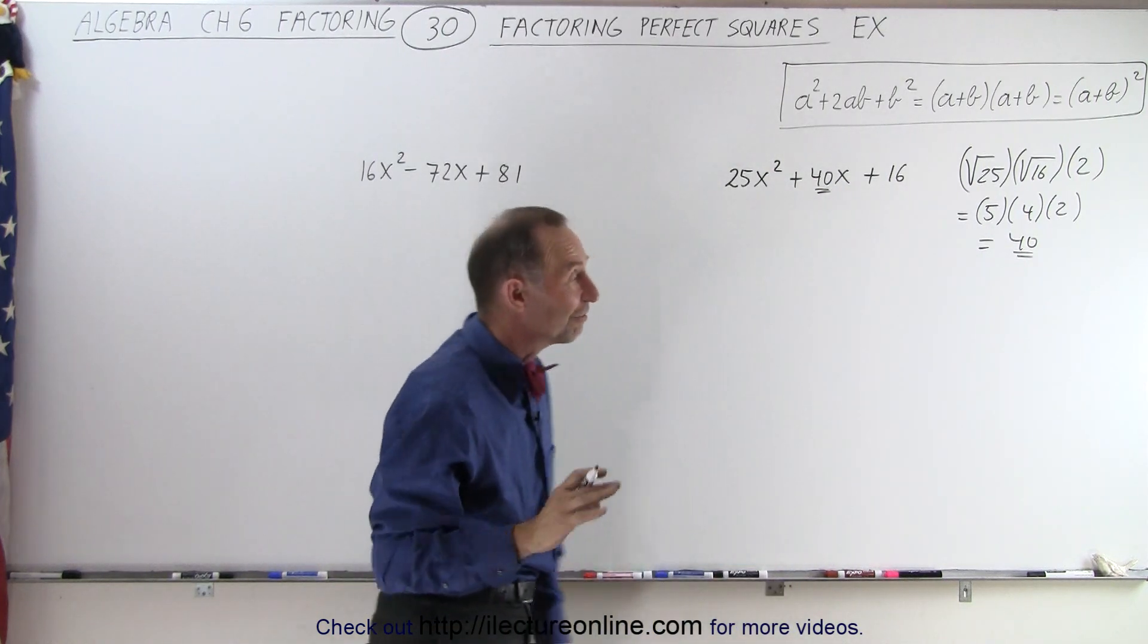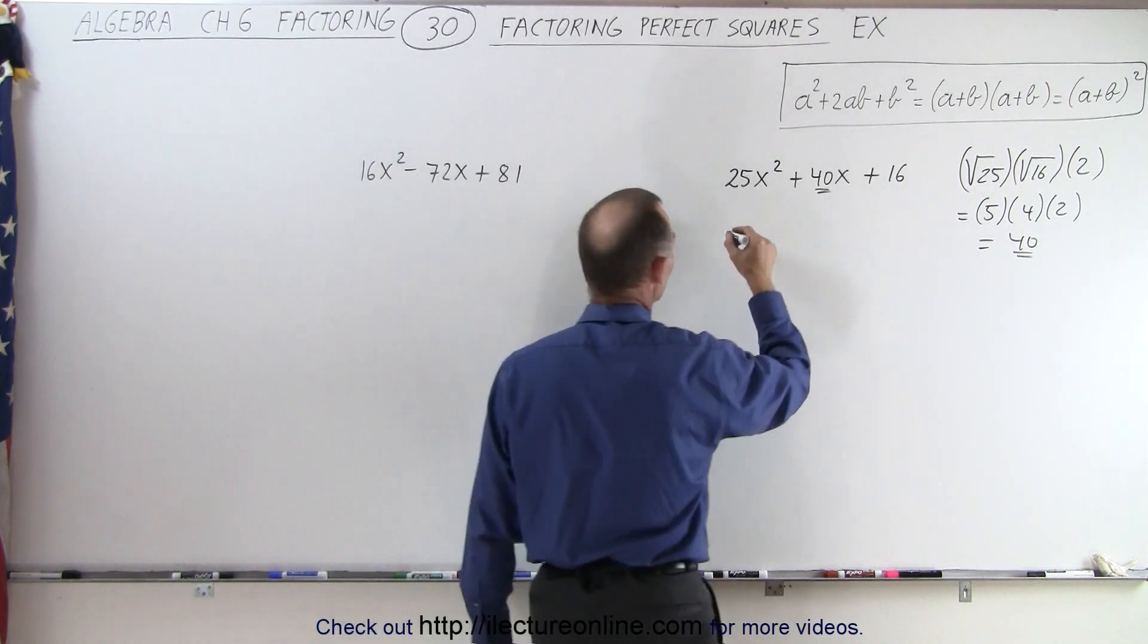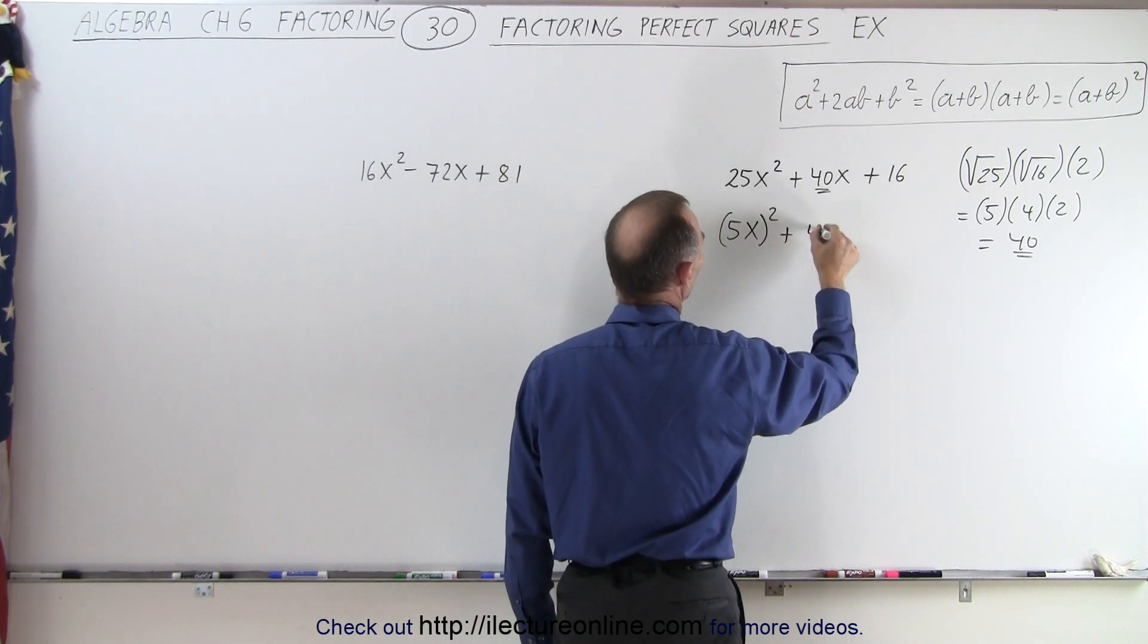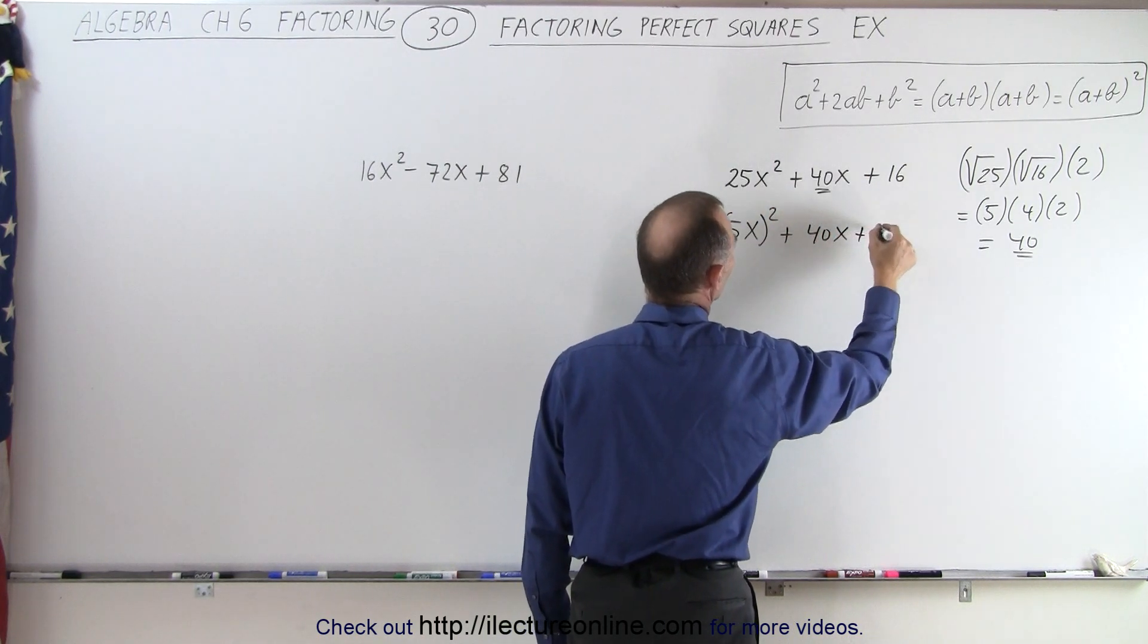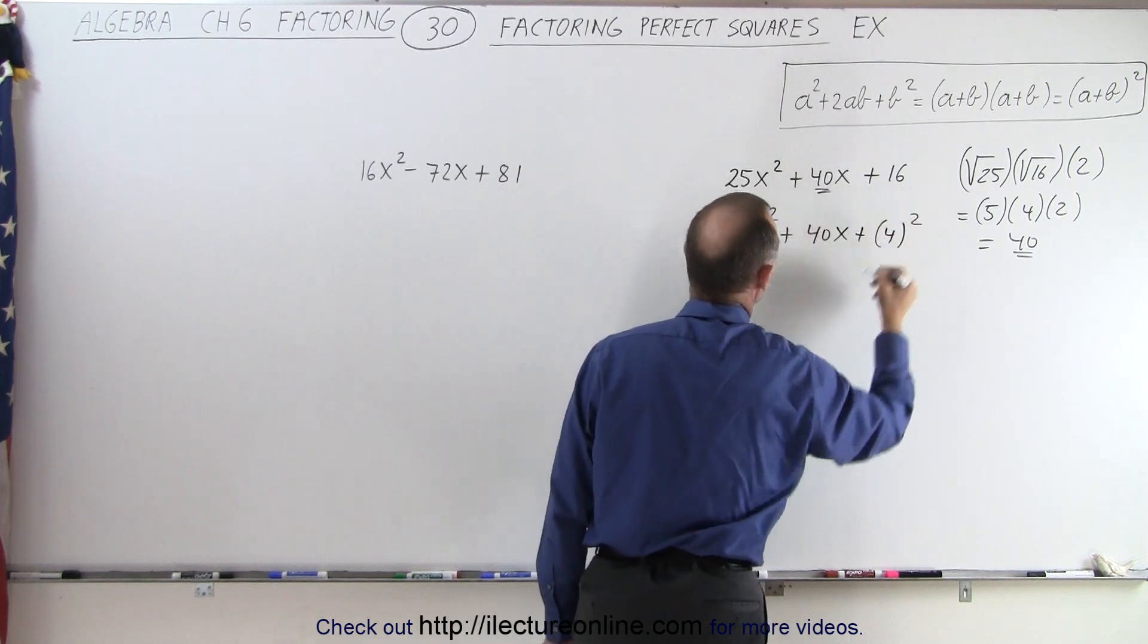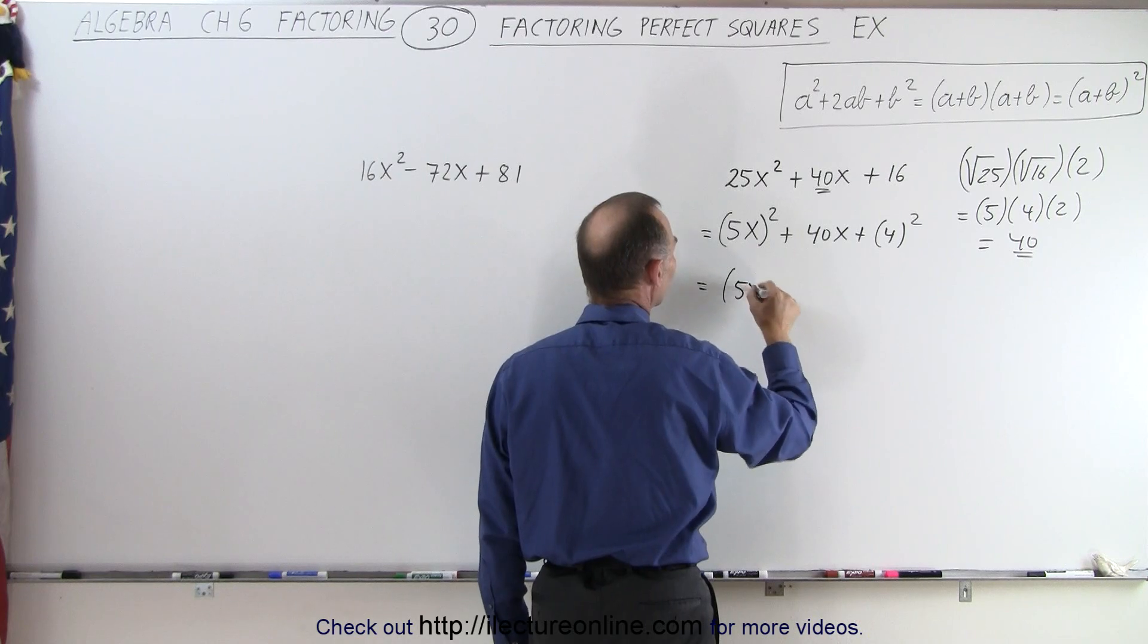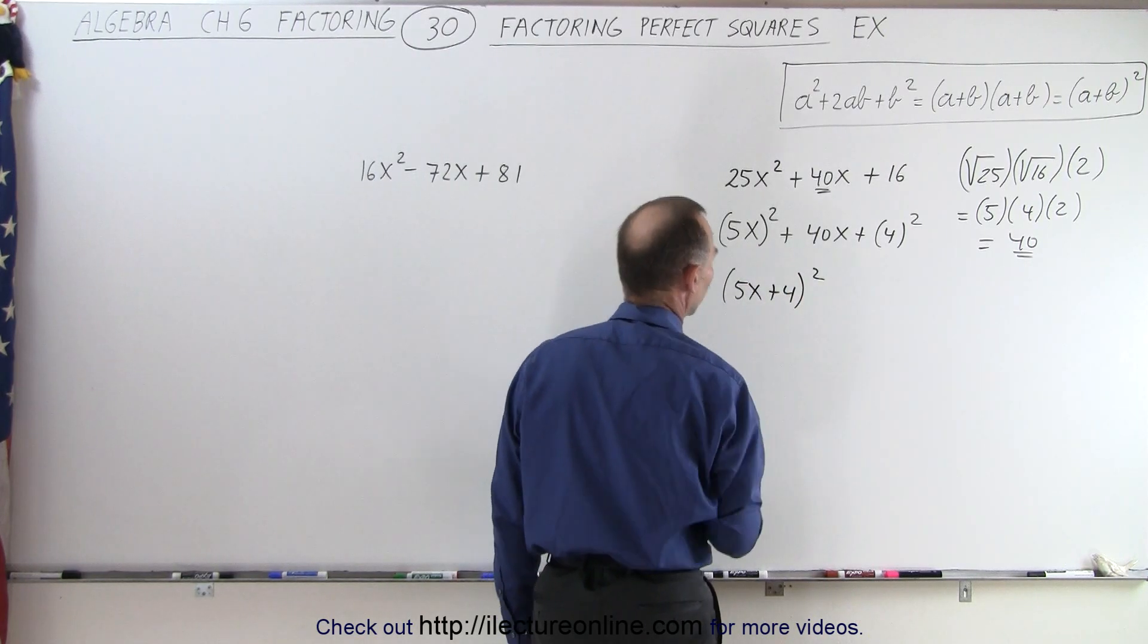So therefore, we can factor this. This can then be written as (5x) squared plus 40x plus (4) squared. Therefore, this can then be factored as (5x plus 4) quantity squared.